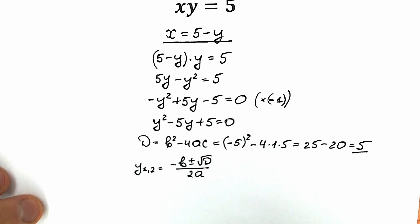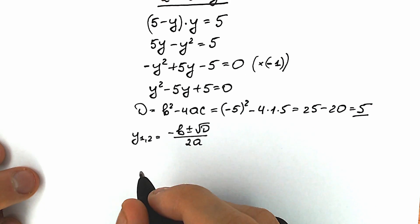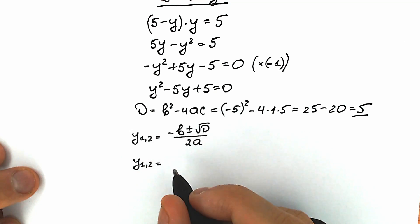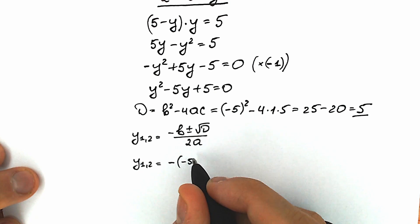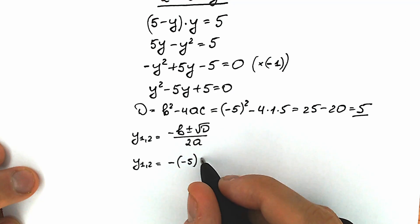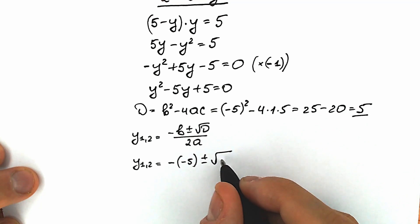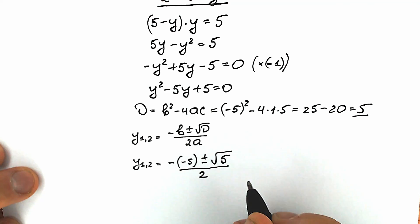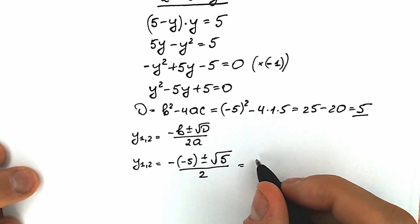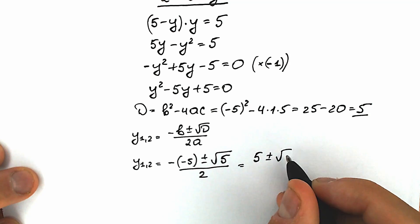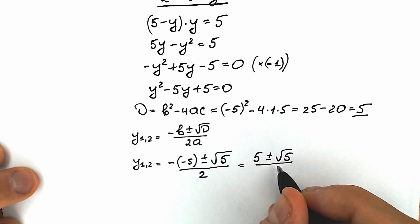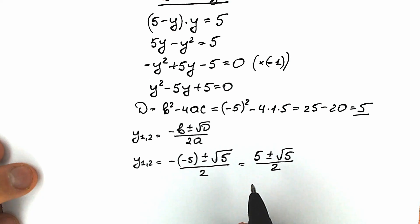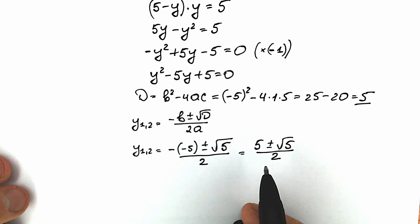Right now let's plug the discriminant into the basic school formula. So y₁ and y₂ equal to minus b plus or minus square root of the discriminant, all over 2a. Plugging in: we have minus b, which is minus negative 5, plus or minus square root of 5, all divided by 2. So minus minus 5 gives us plus 5, giving us y equal to 5 plus or minus square root of 5, all over 2.